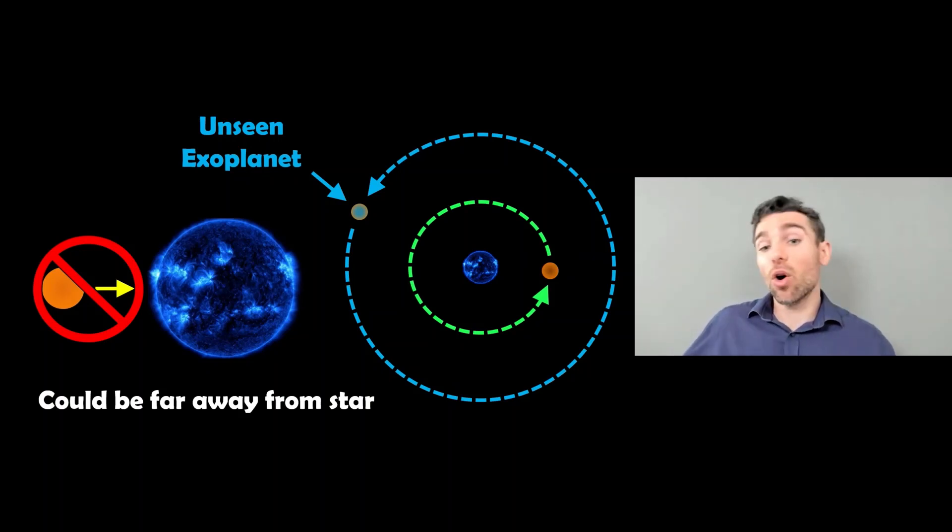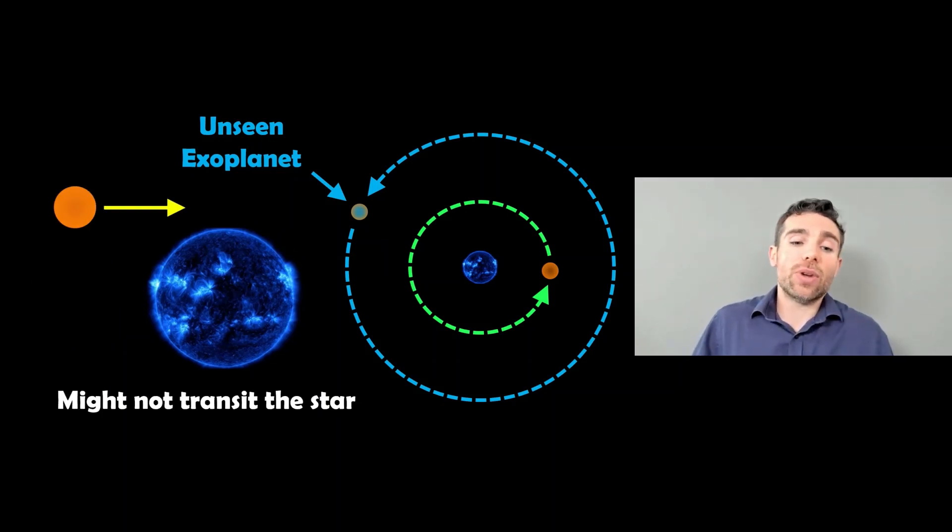Or it could be that it will never transit the star. Its orbit could be inclined compared to the inner planet, the green orbit, so it never actually passes in front of the star from our orientation.